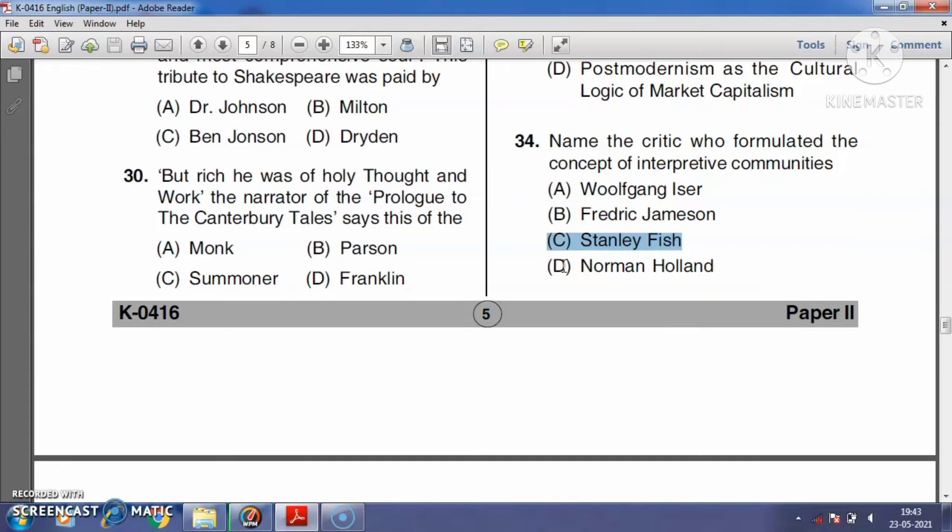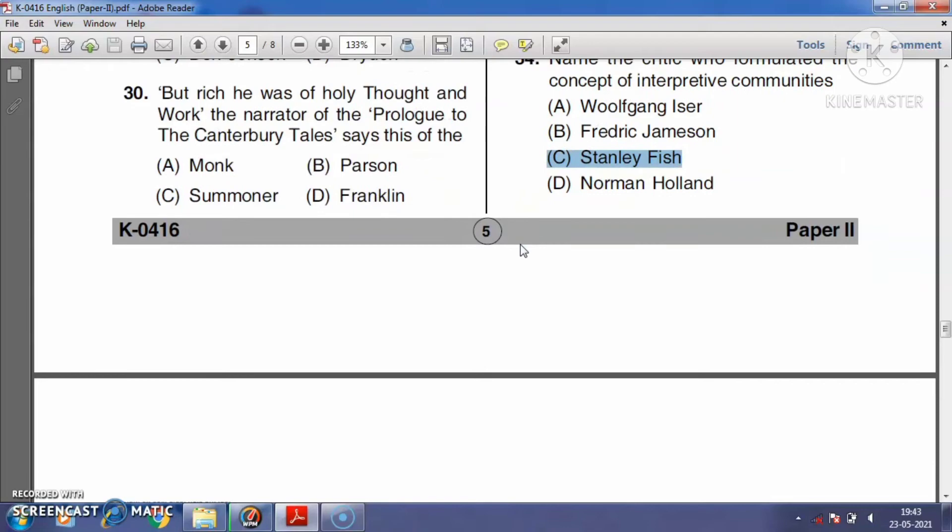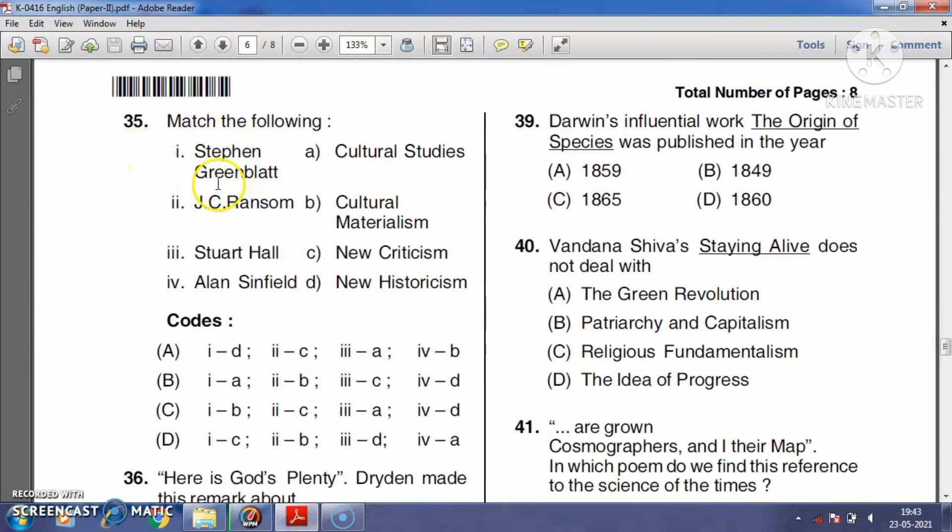Question number thirty-five: Match the following. Stephen Greenblatt is associated with New Historicism, J.C. Ransom is associated with New Criticism, Stuart Hall is associated with Cultural Studies, and Alan Sinfield is associated with Cultural Materialism. The right answer is option A.